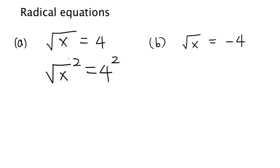This square cancels the radical sign, and that leaves only x on the left-hand side. So x equals 4 squared, which is 16.